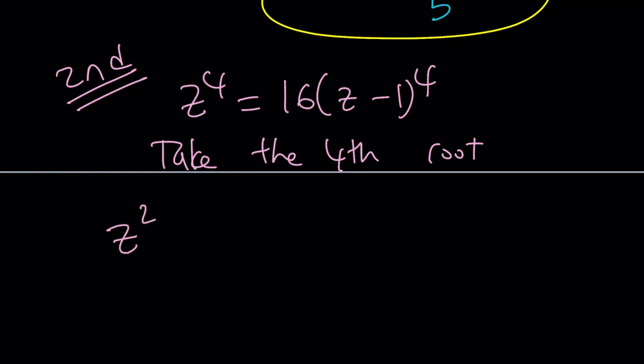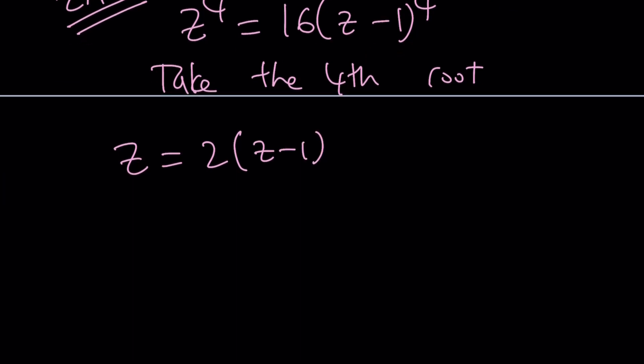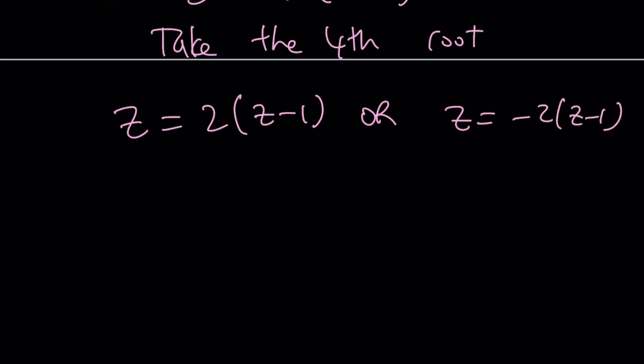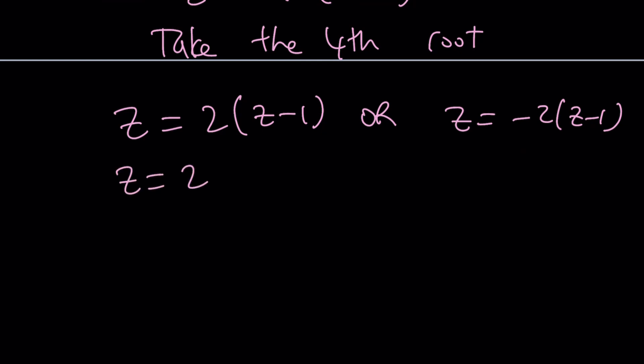And let me tell you how we can get the other ones. But if you take the real roots, you're going to get something like Z squared equals, I'm sorry, we're taking fourth roots. I got distracted. When you take the fourth root of Z to the fourth, you're going to get Z, and then the fourth root of 16 is 2, and you're going to get Z minus 1. That's going to be one of the equations, or you're going to get Z equals the opposite of this.